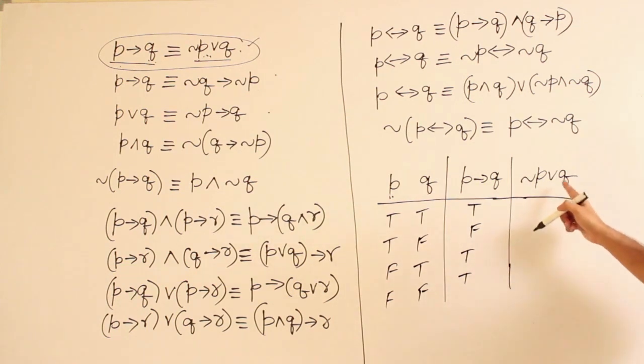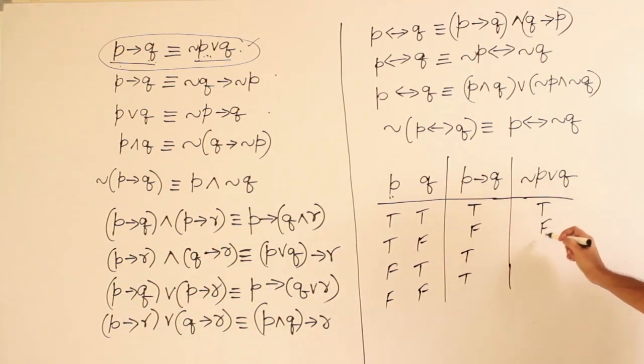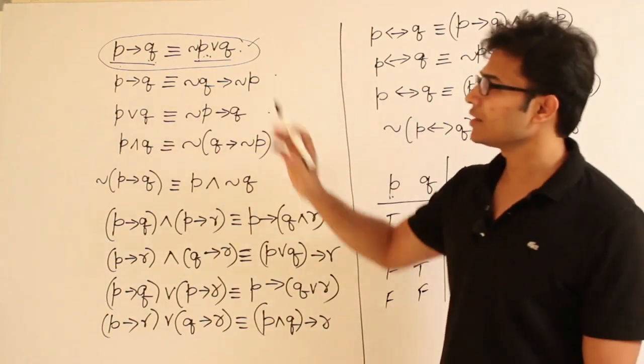And what about this? If you try to find it out, this will also be true, false, true, true. You get the same, right? That is why these two are equivalent.